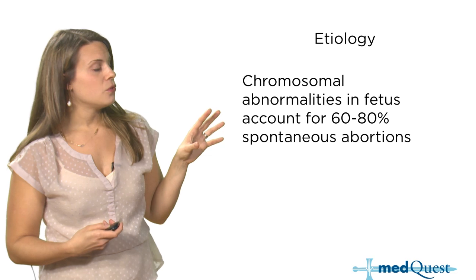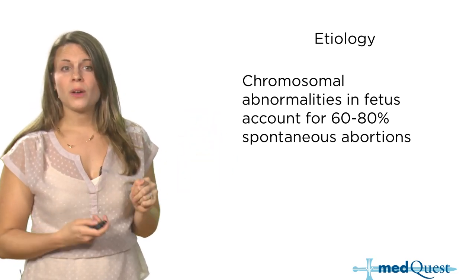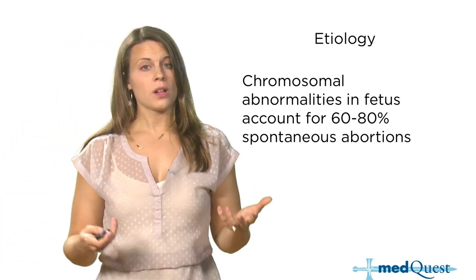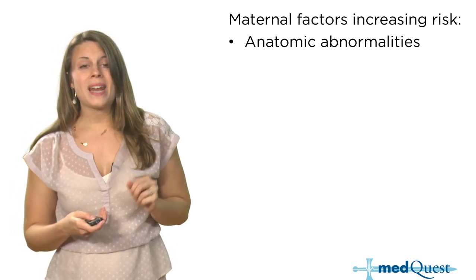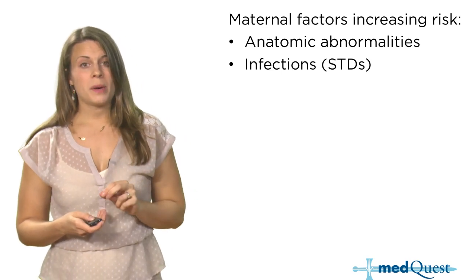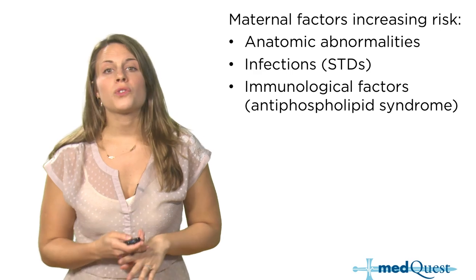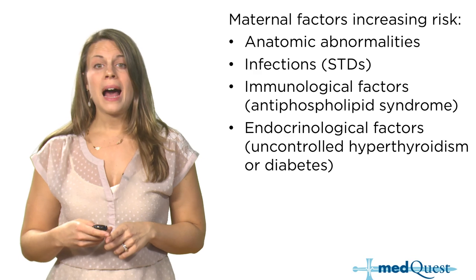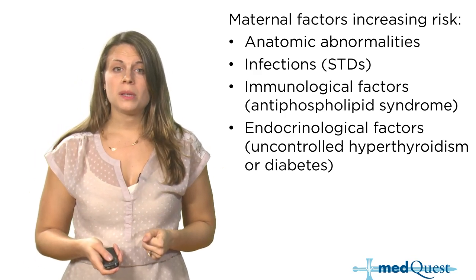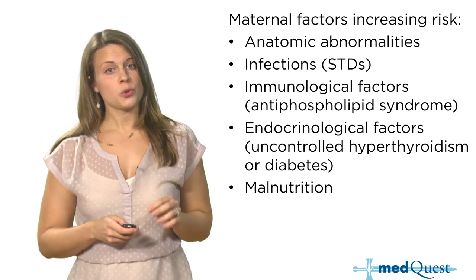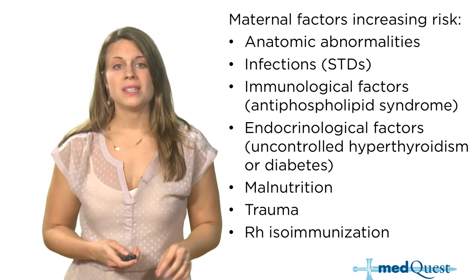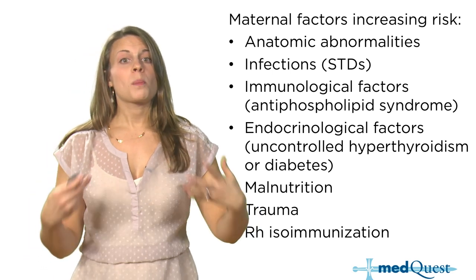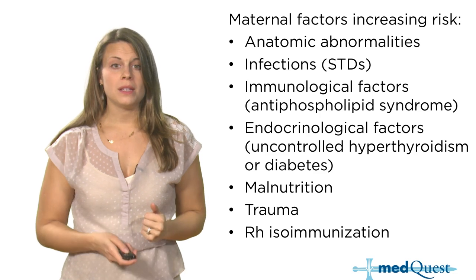The etiology of abortion is typically chromosomal abnormalities in the fetus — about 60 to 80 percent of all spontaneous abortions. Maternal factors that increase risk include anatomic abnormalities of the uterus, infection or STDs, immunological factors such as antiphospholipid antibody syndrome, and endocrine factors such as uncontrolled hyperthyroidism or diabetes. Malnutrition, trauma, and Rh isoimmunization — where maternal antibodies against the fetal blood type ultimately lead to termination of the pregnancy — are also causes.